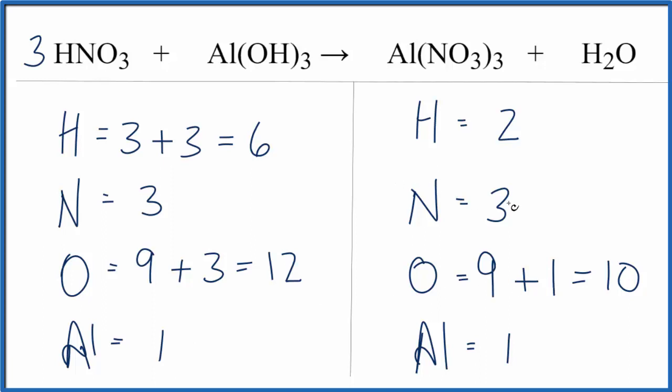Over on the product side, we've balanced the nitrogen. Why don't we look at balancing the hydrogen next? That seems to make sense. We have six hydrogens on the reactant side, only two here. If we put a three in front of the H2O, two times three, that gives us six, and that fixes the hydrogens.